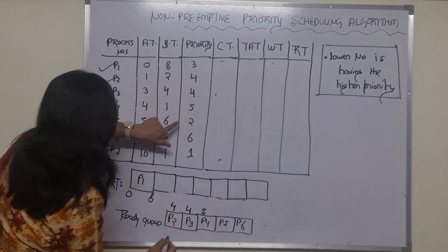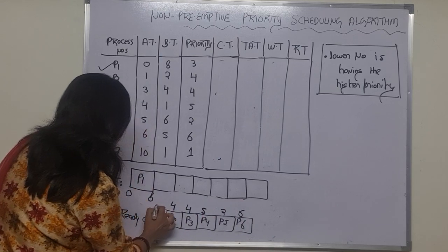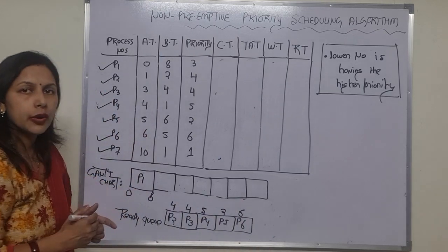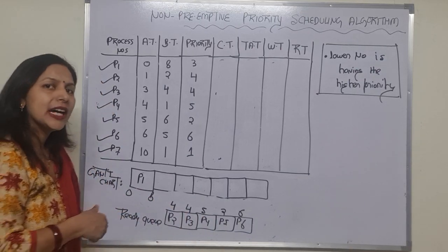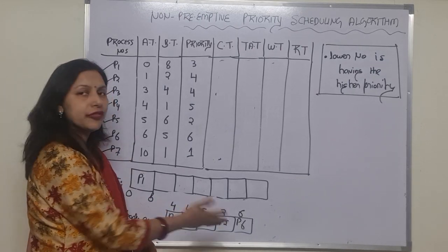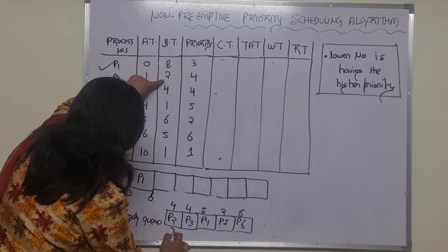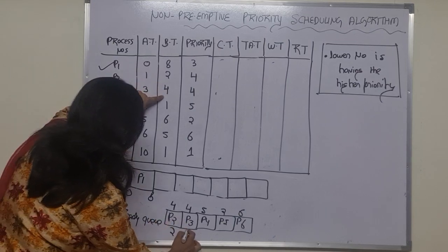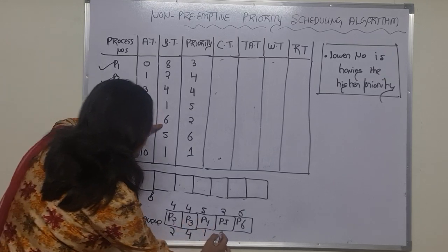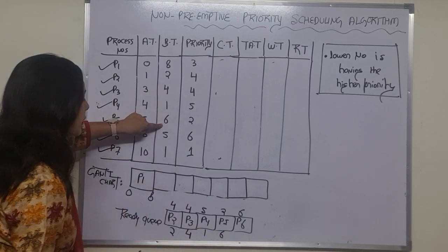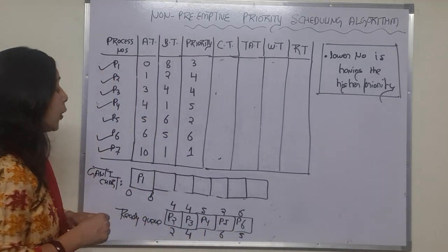The priorities are: P2 = 4, P3 = 4, P4 = 5, P5 = 2, and P6 = 6. The burst times are: P2 = 2, P3 = 4, P4 = 1, P5 = 6, and P6 = 5.